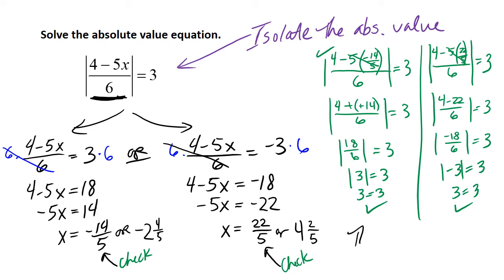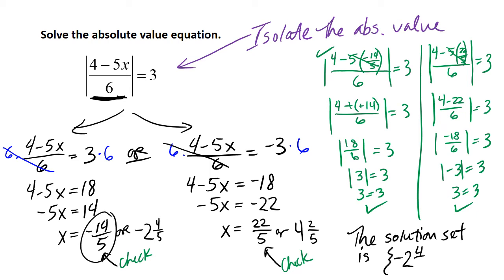Therefore, the solution set will again have two values. Starting with the lower one, that would be negative 2 and 4 fifths (or negative 14 fifths as an improper fraction), comma 4 and 2 fifths (or 22 fifths). It's your choice whether to write it as an improper fraction or a mixed number. The check is always cleaner as an improper fraction.